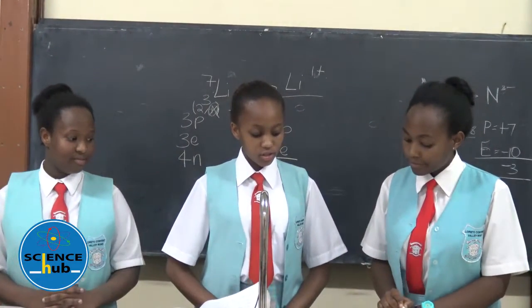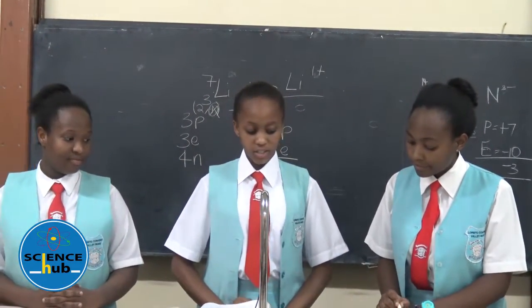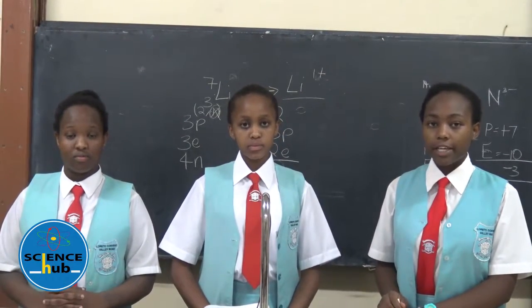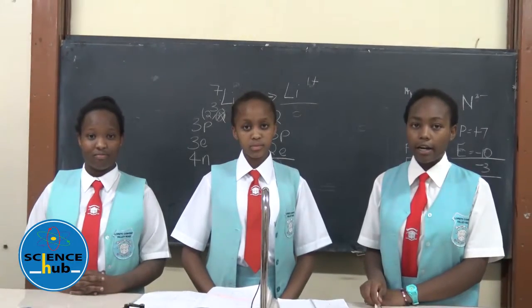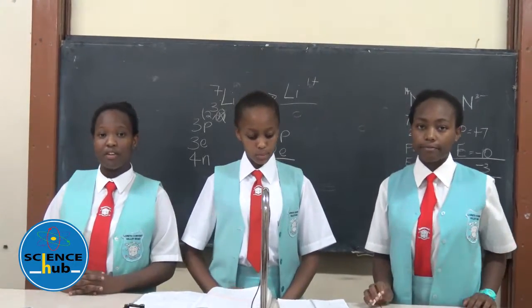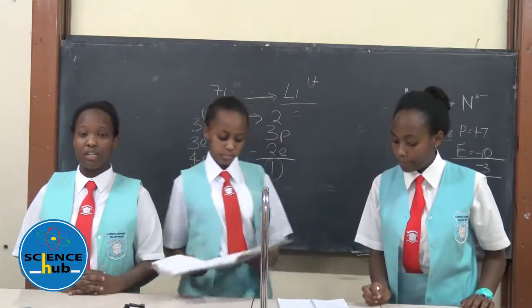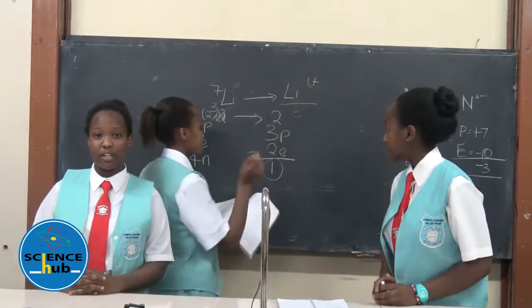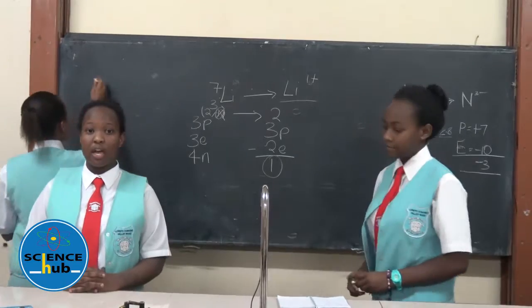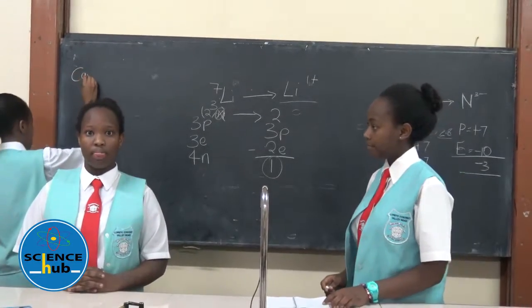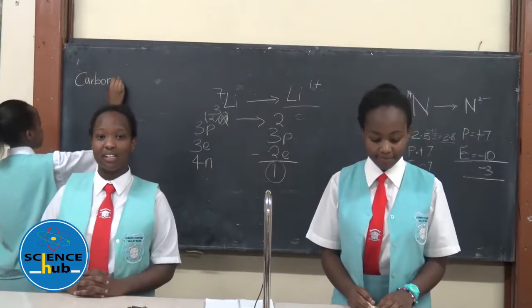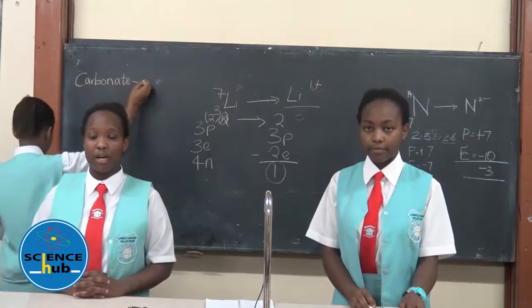We will now move on to the radicals. There are six radicals that we are going to talk about today. Five of these radicals are anions, while one of these radicals is a cation. The five anions include the carbonate ion, the sulfate ion, the sulfite ion, the phosphate ion, and the nitrate ion. And the cation is the ammonium ion.